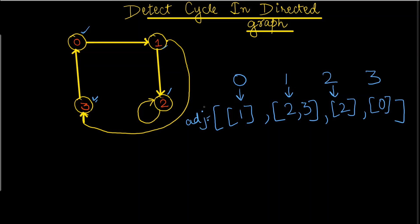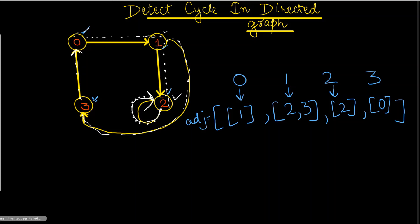For detecting a cycle, the first thing I need to do is traverse through each node. I'll start from the 0th node — 0 is going towards 1, then 1 is going towards 2. By now, 0, 1, and 2 are traversed. When I traverse 2 again, we encounter a node already traversed — meaning it is making a cycle. Coming back to 1, when I go towards 3, and 3 is going towards 0, which has already been traversed — here also it is making a cycle.